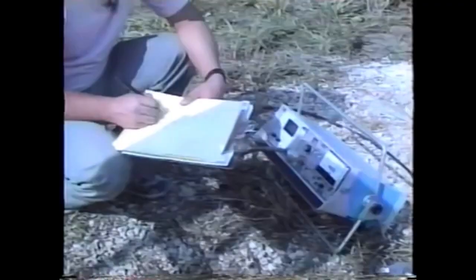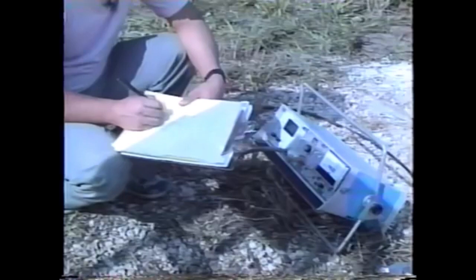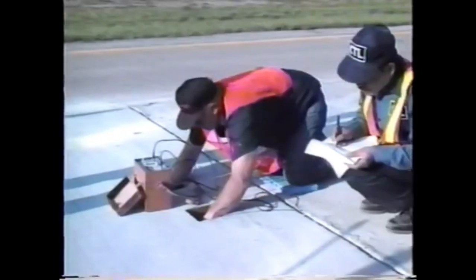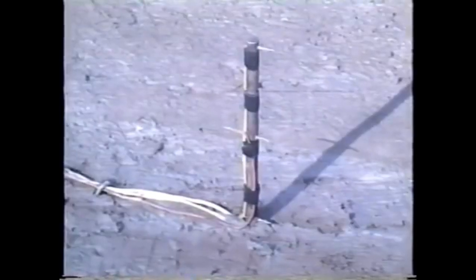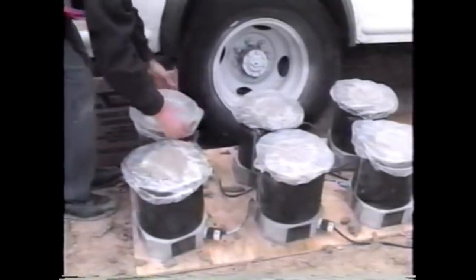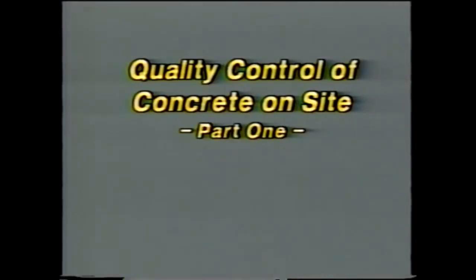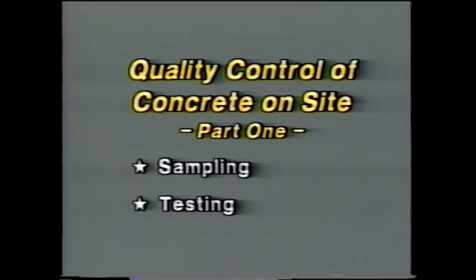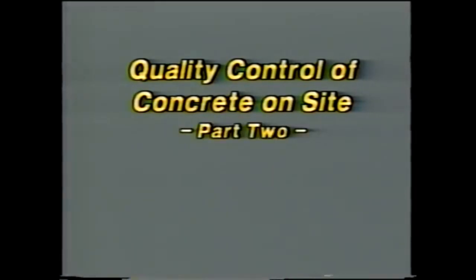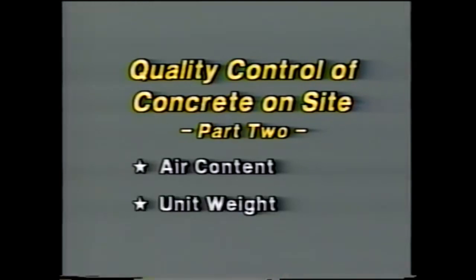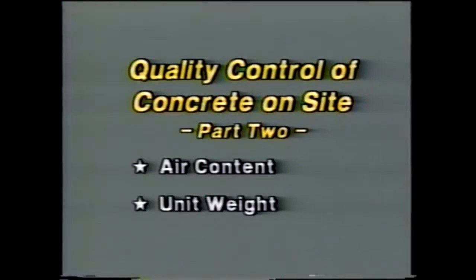In parts three and four, you'll see new quality control procedures that have been developed by Sharp and others for testing concrete both before and after it's cast. Here in part one, we'll look at sampling concrete and at the test methods for temperature and slump. In part two, we'll look at the test methods for air content and unit weight, as well as the procedures for making cylinders and beams.